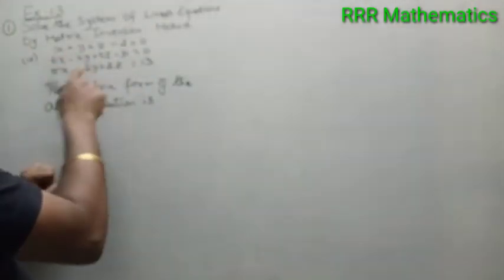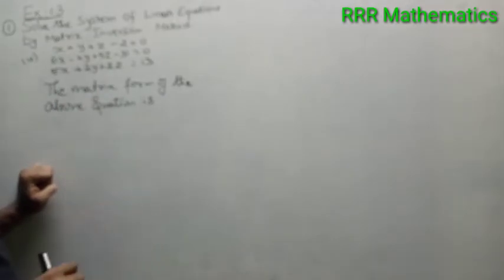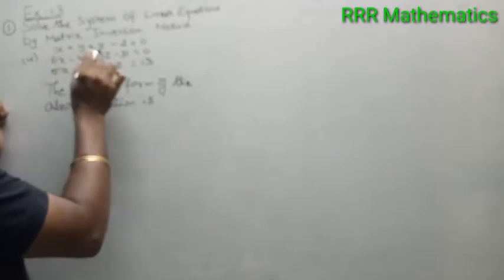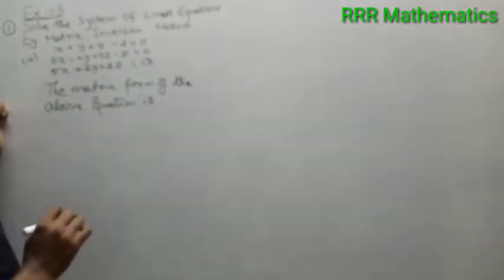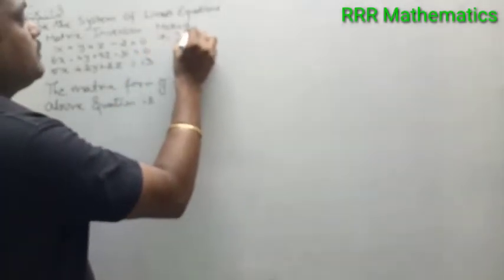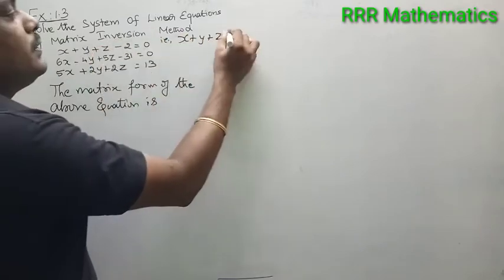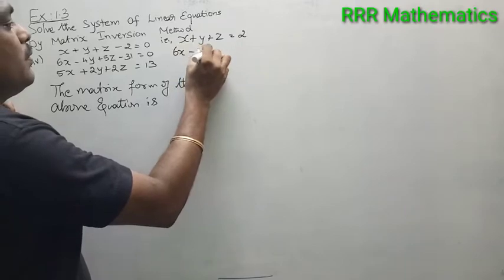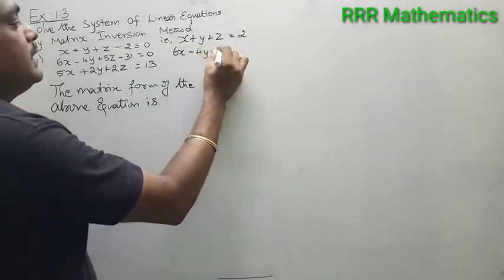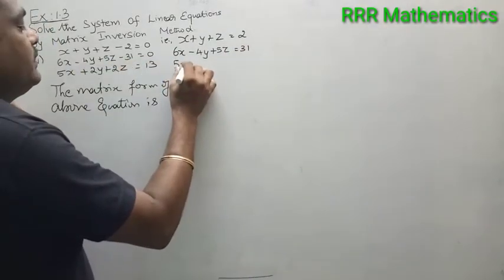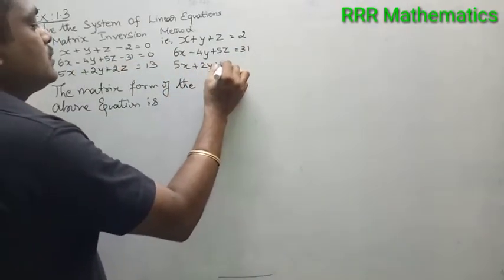We have three equations and three variables: x, y, and z. The first equation is x plus y plus z minus 2 equal to 0. In standard form: x plus y plus z equal to 2. The second equation: 6x minus 4y plus 5z plus 31. And the final equation: 5x plus 2y plus 2z equal to 13. Write in this format.